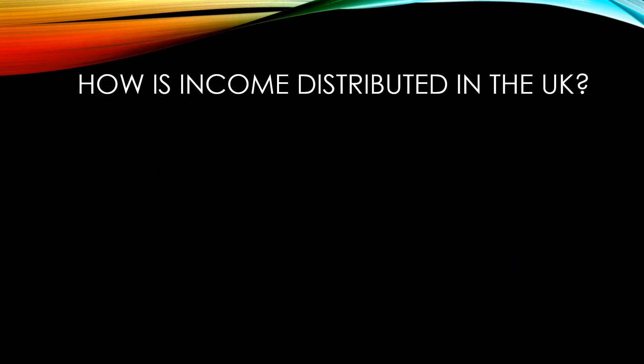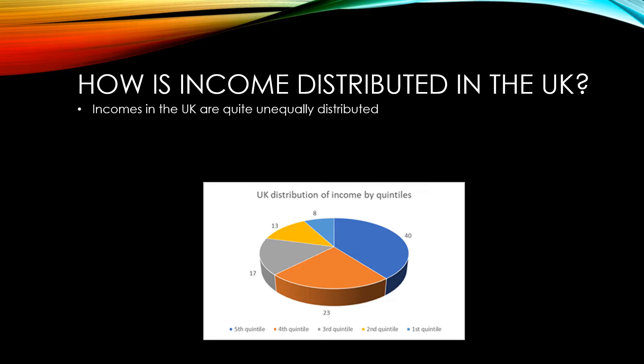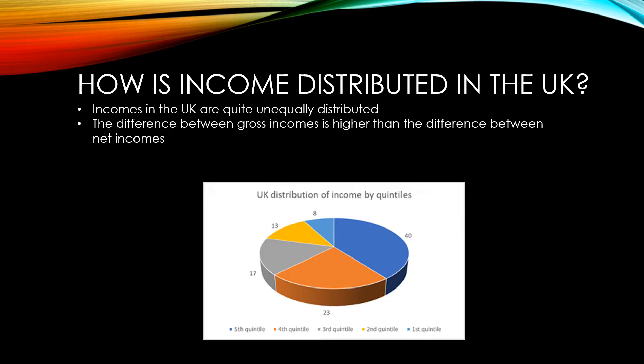In the UK, incomes are quite unequally distributed. As you can see from this chart, the top 20% of earners earn 40% of all income, while the bottom 20% earn only 8%. The gap between gross incomes of the highest and lowest earners is actually much higher than shown here, but the UK's progressive tax system shifts the balance back a bit, because it takes a higher amount of tax from higher earners, and people earning benefits would pay no tax at all.